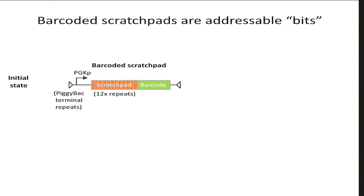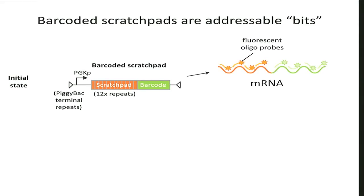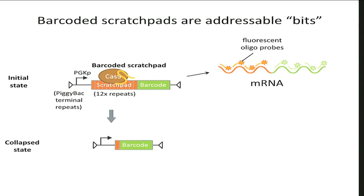To do a recording system using this technology, we first need a way of writing information in the genome. Our basic unit — we call this the barcoded scratch pad — represents one bit of information storage. It's a synthetic gene with two parts: the first part is a repetitive element we call the scratch pad, and the second part is a unique barcode. When expressed, it's expressed into an mRNA, and we can probe that mRNA with two sets of probes — one to the scratch pad and one to the barcode. If we come in with Cas9 targeting that repetitive region, we make a double strand break, and through homologous recombination, the repeats collapse to a much shorter segment with usually just one repeat. The mRNA will still have the barcode, but it will lack the scratch pad component — you can think of this as the zero and the one state of the bit.